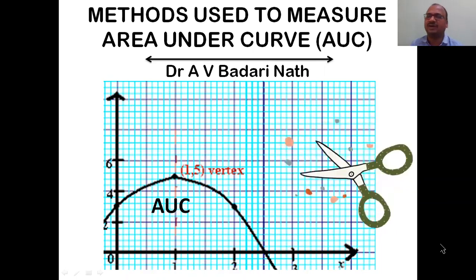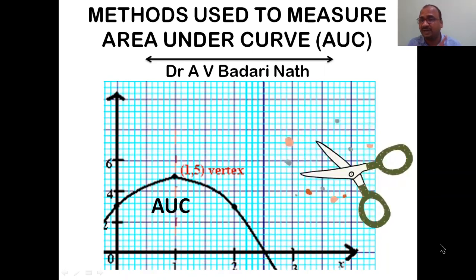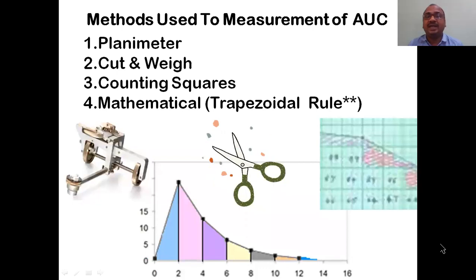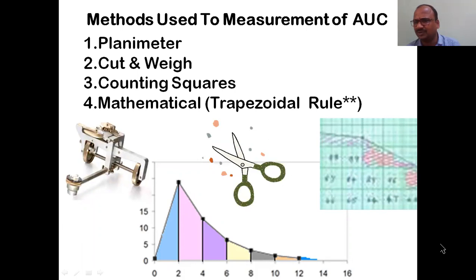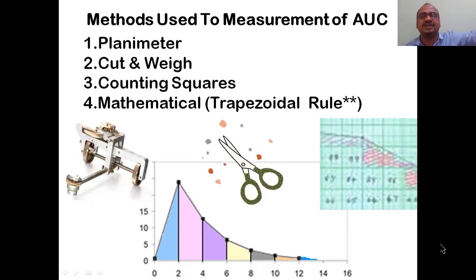In this video we will see what are the various methods to measure AUC. This is a very important topic for all examinations. AUC - area under the curve - is a very popular name. Mainly there are four methods: planimeter, cut and weight method, counting squares, and the trapezoidal method, which is the most widely used - I have marked it with a star.